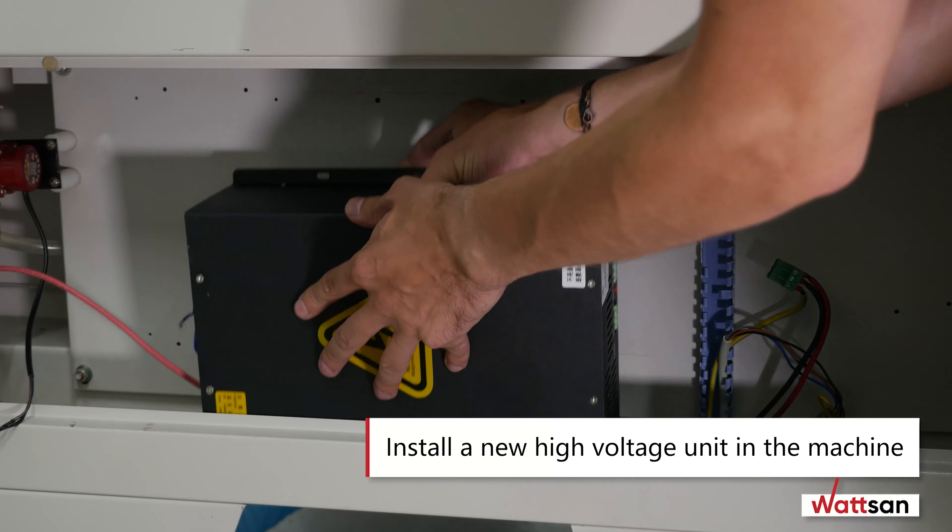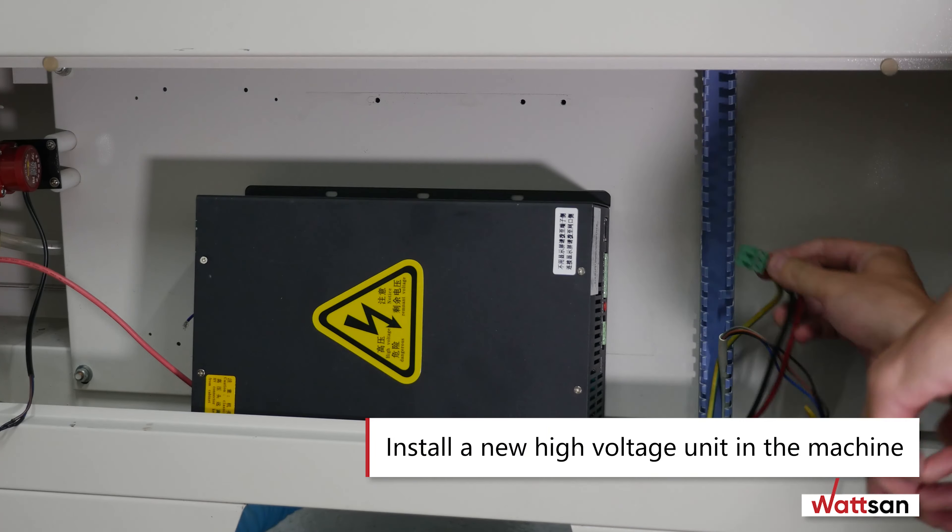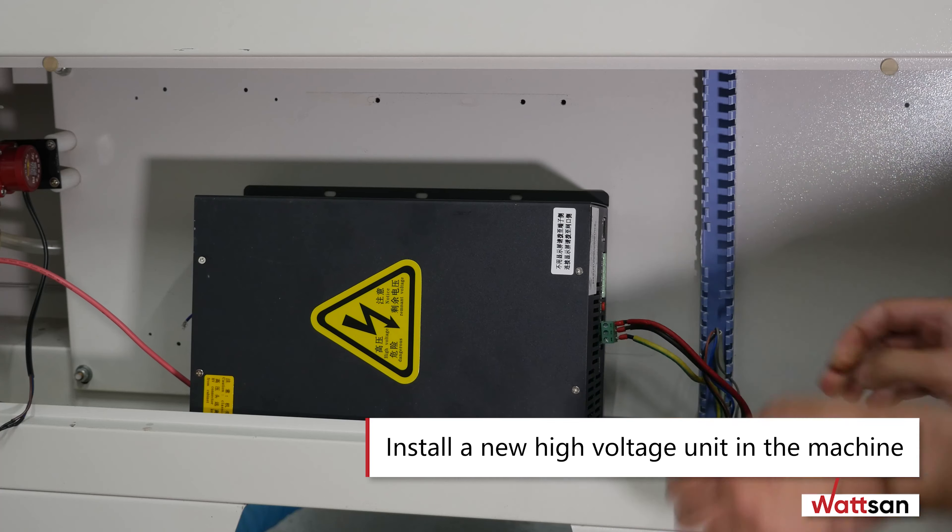Install a new high voltage unit in the machine. Connect the power supply terminal and then the control terminal.